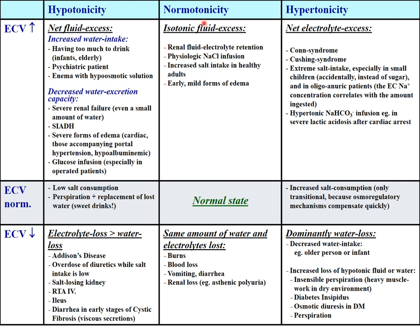Normotonic overhydration occurs when someone takes too much isotonic fluid — such as through renal electrolyte retention, excess physiological saline infusion, or increased salt intake associated with water intake.